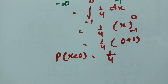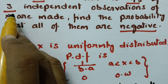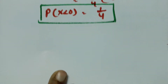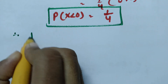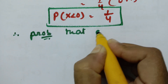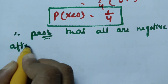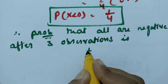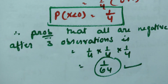The probability that a single observation is negative is 1/4. Since three independent observations of x are made, the probability that all three are negative is (1/4) × (1/4) × (1/4) = 1/64. So the probability that all observations are negative after three independent observations is 1/64.